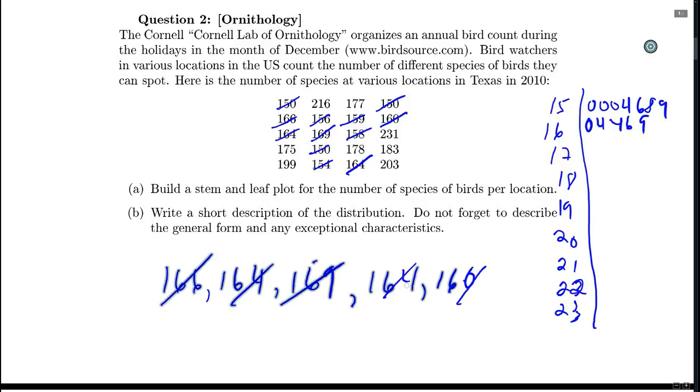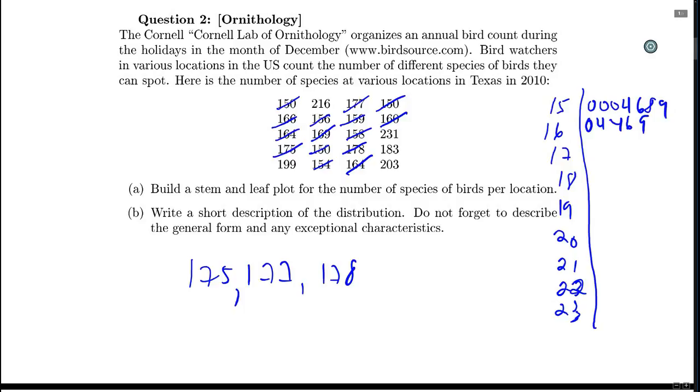And now let's do the 170s. I have 175, 177, 178, 175, 177, 178. I think that's it, so 5, 7, and 8. So these are leaves in order.